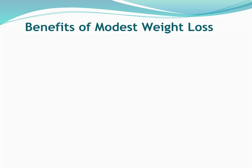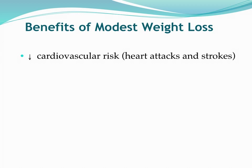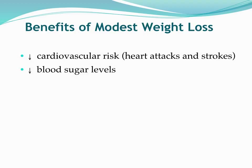If you've got an individual that's 240 pounds and they lose 24 pounds over the course of six to nine months to a year, that's going to significantly lower their systolic blood pressure, reducing their risk of stroke and cardiovascular disease. Modest weight loss can reduce risk of cardiovascular disease and lower blood sugar levels. For pre-diabetic patients, that's going to reduce the risk of progressing to full-blown diabetes; for those who already have type 2 diabetes, it results in better control of symptoms and a healthier lifestyle.